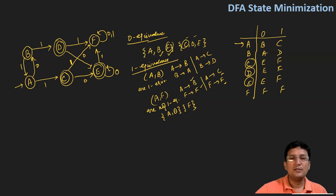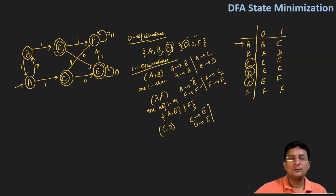Now for the pair C and D: C on zero goes to E, D on zero also goes to E. C on one goes to F and D on one also goes to F. Since both transitions lead to the same states — E and E, F and F — they are obviously in the same sets. So C and D are one equivalent.